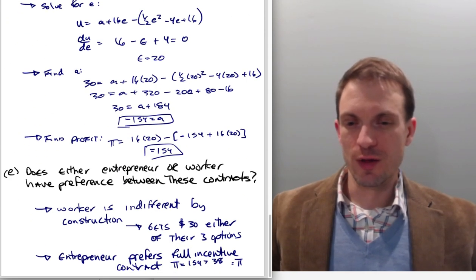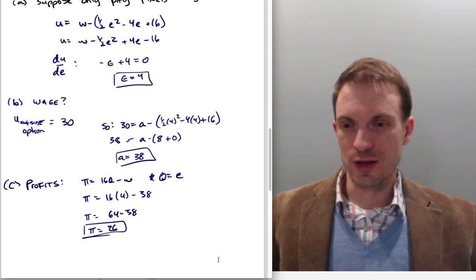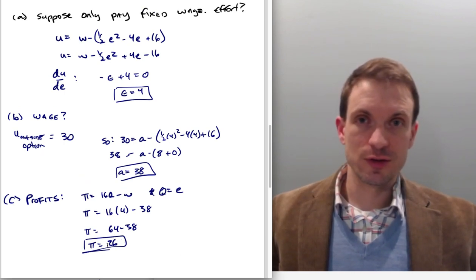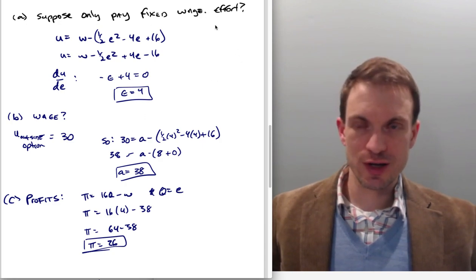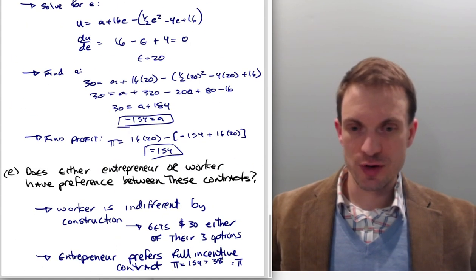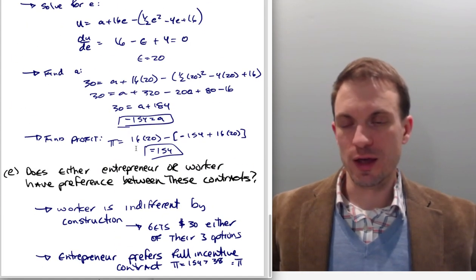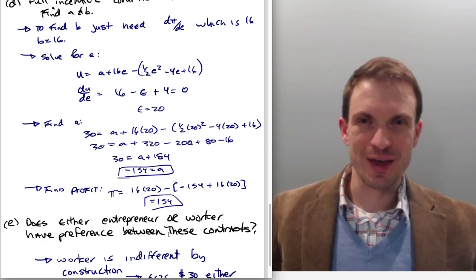It doesn't matter whether they do the full incentive contract, whether they do the fixed wage contract, or whether they do whatever was their outside option, which was not working for us. They're going to get $30,000 either way. What about us? What do we prefer? Well, we prefer the full incentive contract because our profits there are $154,000 versus $26,000 in the fixed wage contract.